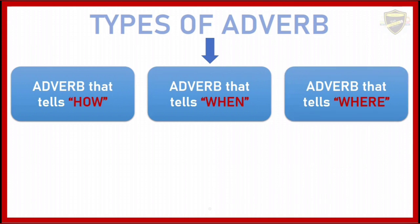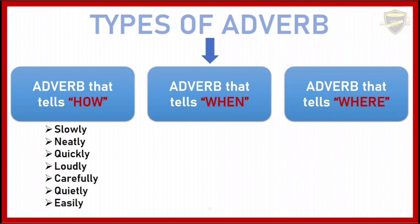Now let's see some words which will come under each category. Adverb that tells how — words like slowly, neatly, quickly, loudly, carefully, quietly, and easily. All these words tell us how an action happened.